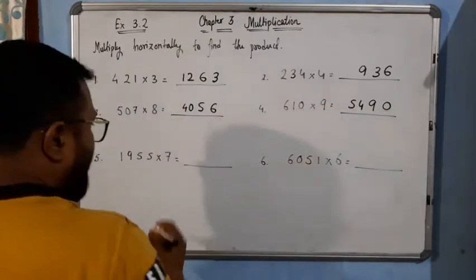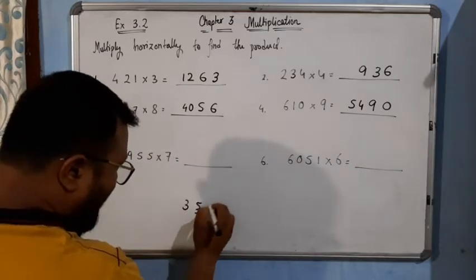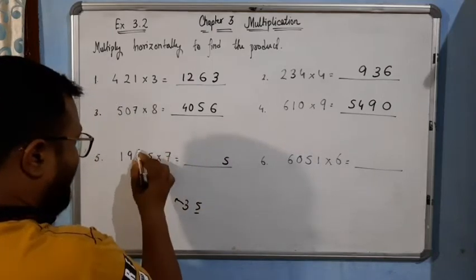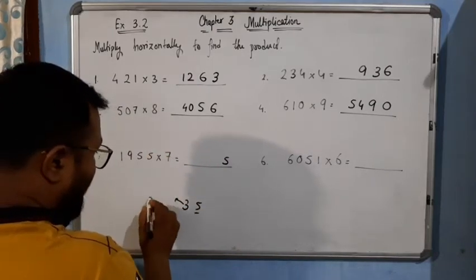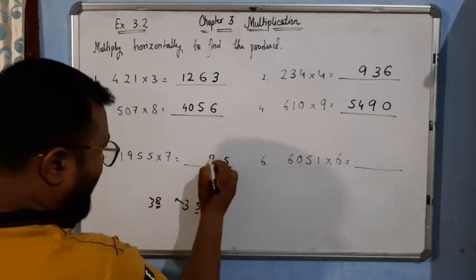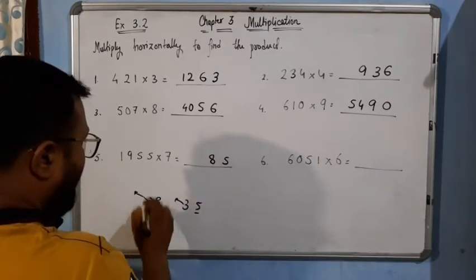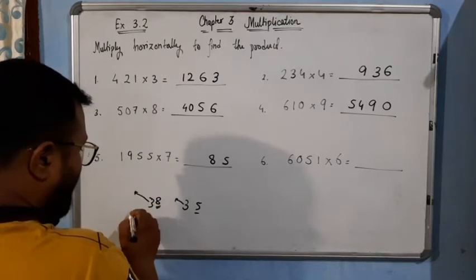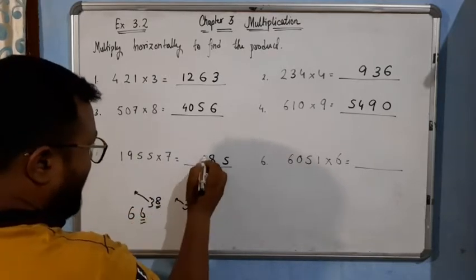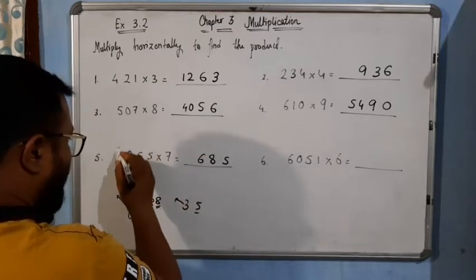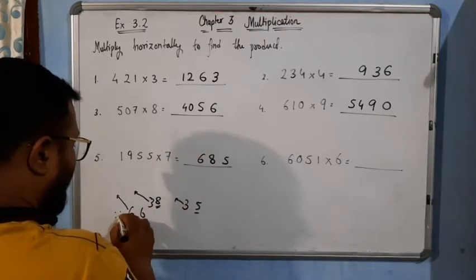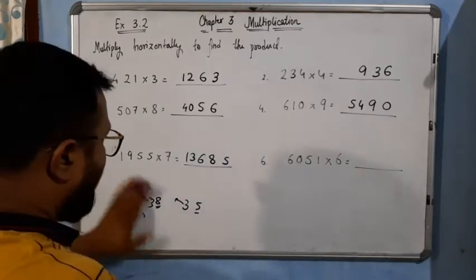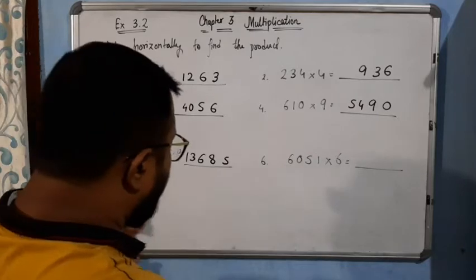Now 7 times 5 is 35. 5 we will write here, 3 will be carried over. Then again 7 times 5 is 35, plus 3 is 38. We will write 8, again 3 will be carried over. Now 7 times 9 is 63, plus 3 is 66. We will take 6, and 6 will be carried over. 7 times 7 is 49, plus 6 is — continuing, so we will write 13. So the answer will be 13,685.